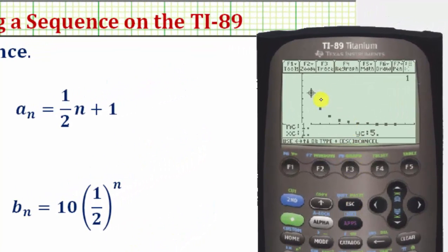If we press F3 for trace, we can see the terms in the sequence here all the way out to the tenth term. Notice how these terms approach zero.